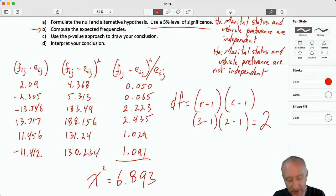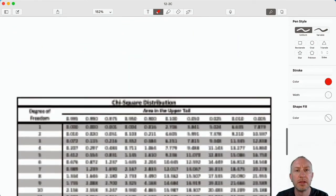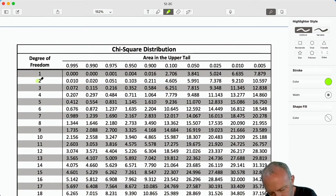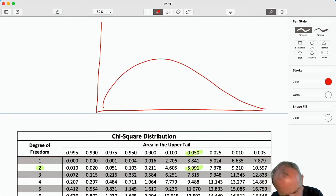So we have 2 degrees of freedom. We have a level of significance, alpha is 0.05. We have a chi-squared of 6.89. So here we are at our chi-squared distribution, 2 degrees of freedom. Here's alpha, a familiar value. We have that chi-squared critical value, 5.991.